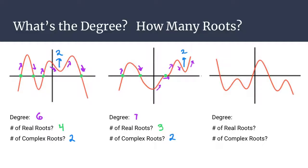For the third graph, looking at the number of directions to determine the degree, it also travels seven different directions, so the degree is seven. The number of real roots is the number of x-intercepts — there are three different x-intercepts, so three real roots. Now looking for parabolas opening away from the x-axis, that actually occurs in two different locations. The first parabola piece opens away and gives us two complex roots, and the second parabola also opens away from the x-axis, giving us two more complex roots, for a total of four complex roots.